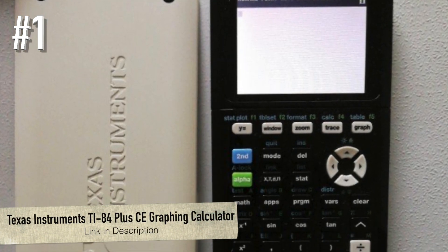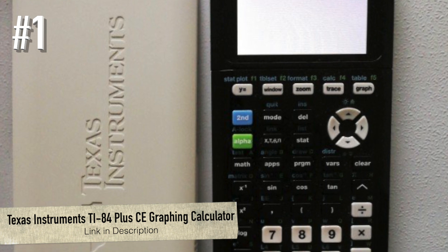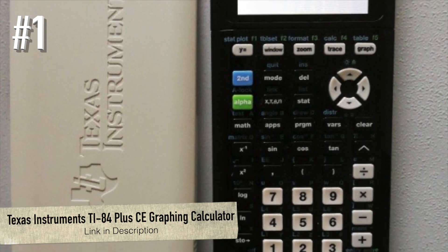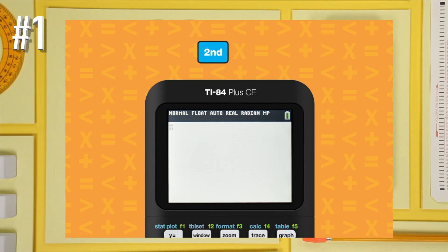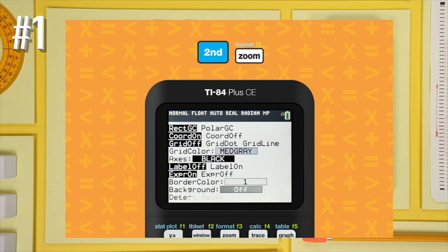Number 1. Texas Instruments TI-84 Plus CE Graphing Calculator. The TI-84 Plus CE Graphing Calculator comes pre-loaded with more than a dozen applications, such as inequality graphing, correct math notation, and data collection.